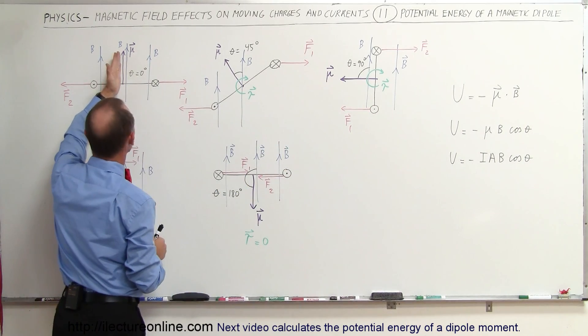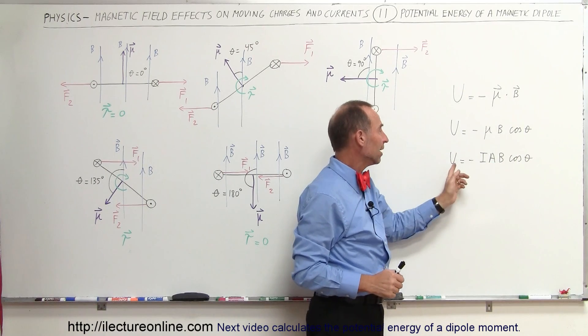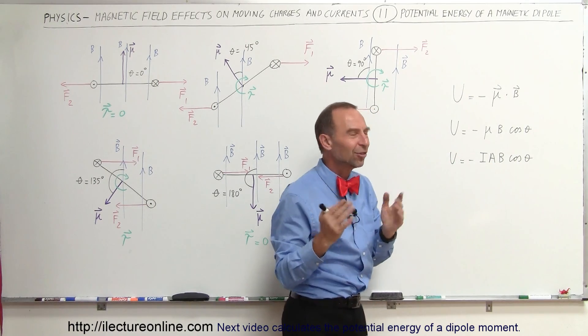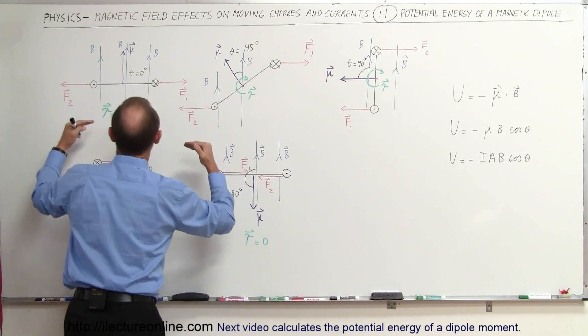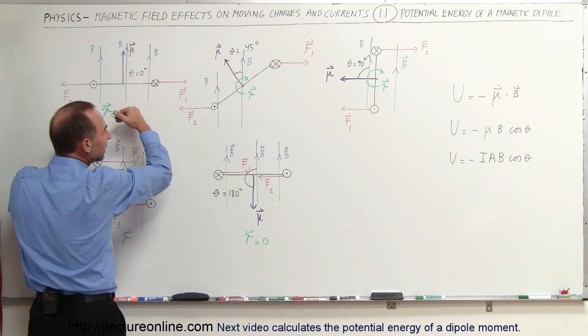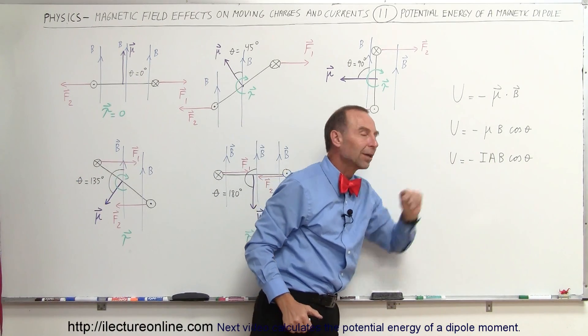Notice when the angle is zero degrees, then the cosine is the maximum value of one, and that means that the energy stored is the maximum negative value you can have, which is interesting that the definition is such that the energy stored at this point is equal to minus IAB, the magnetic dipole moment of magnitude times the B field.